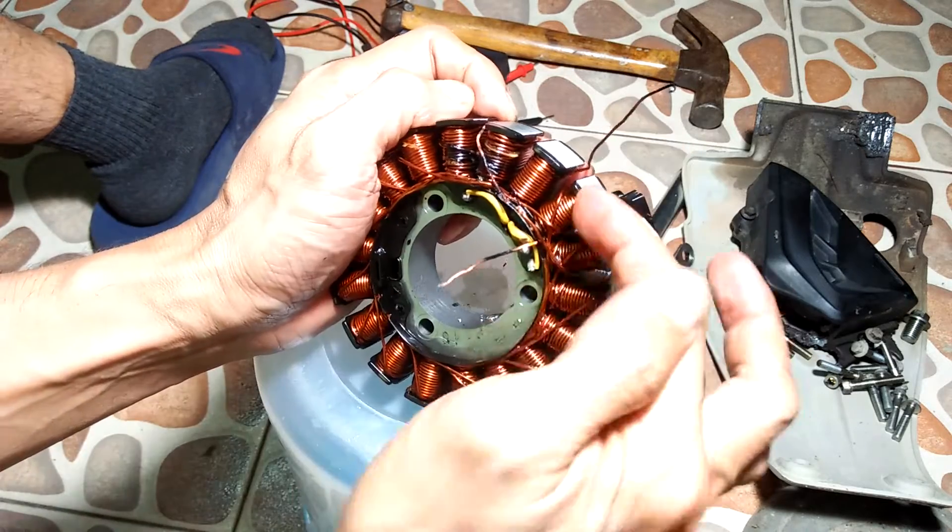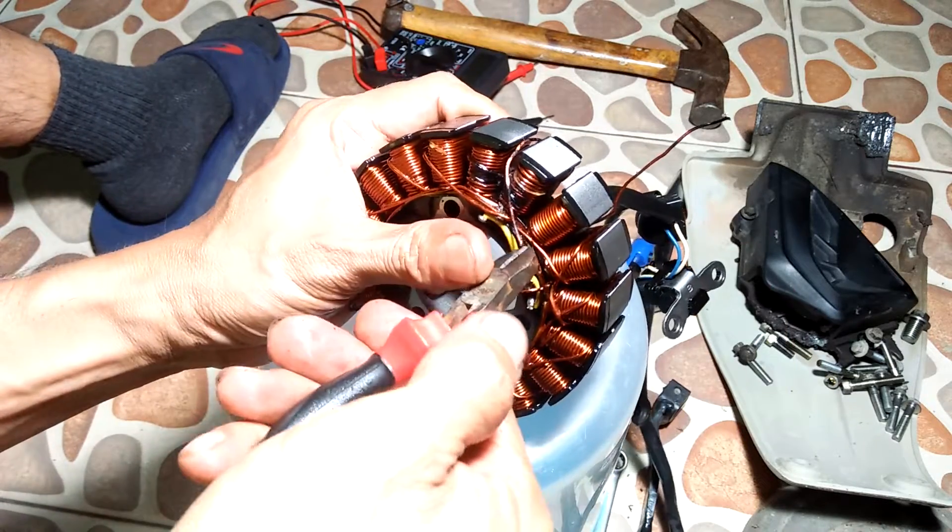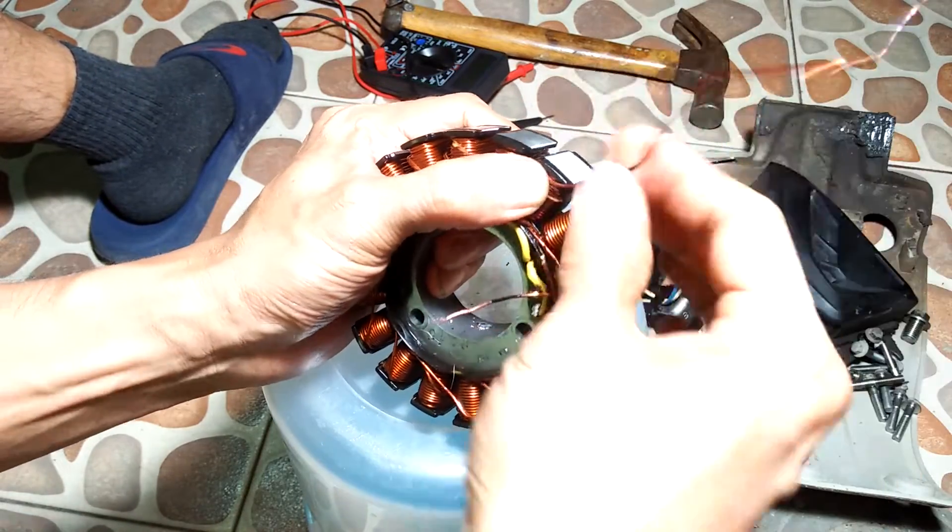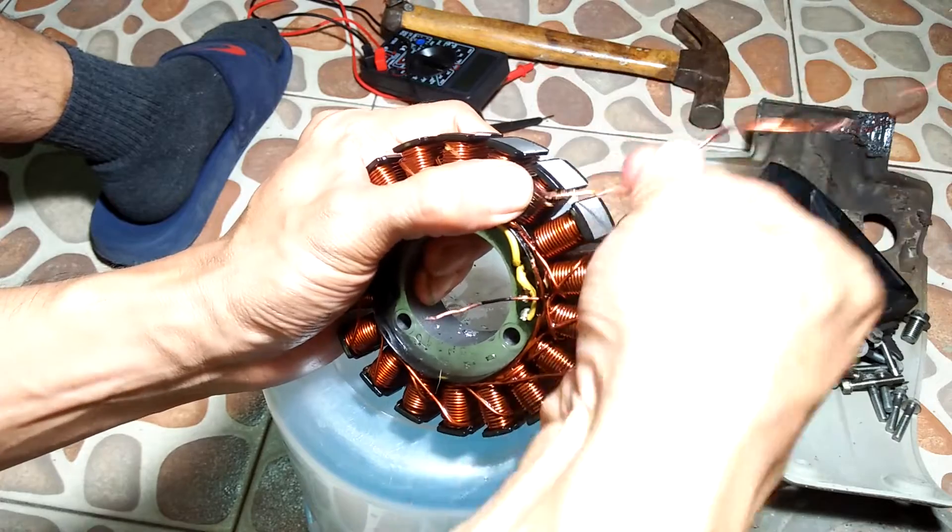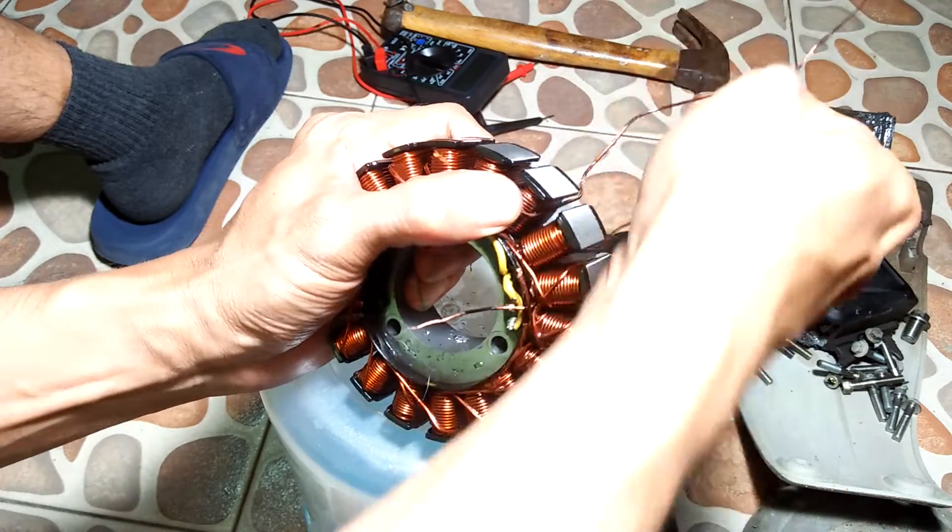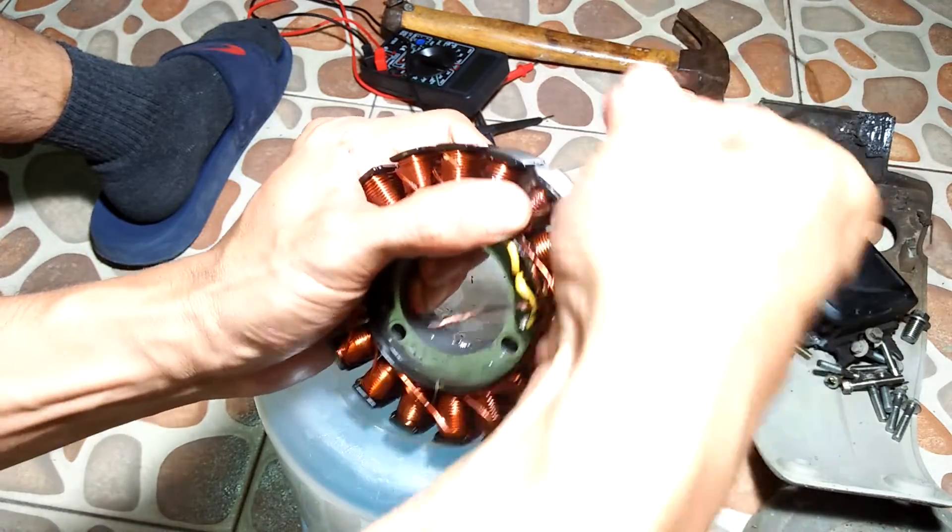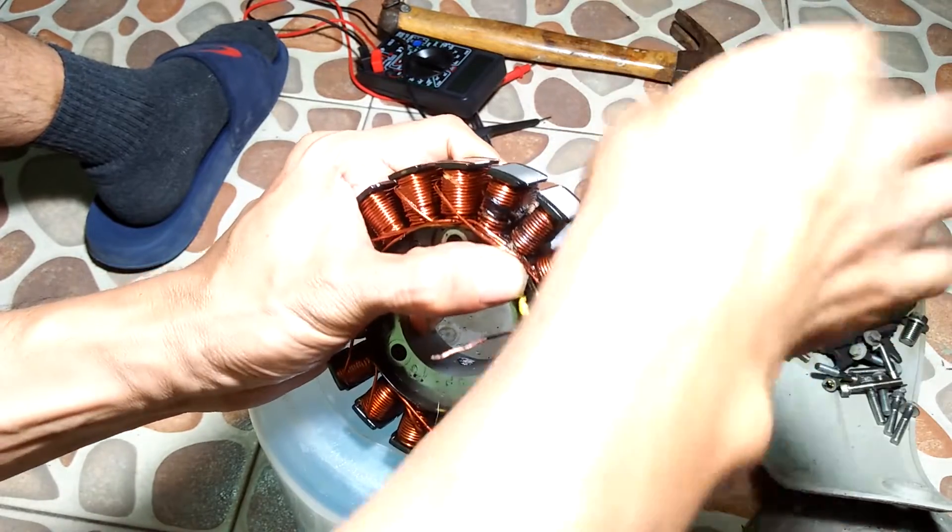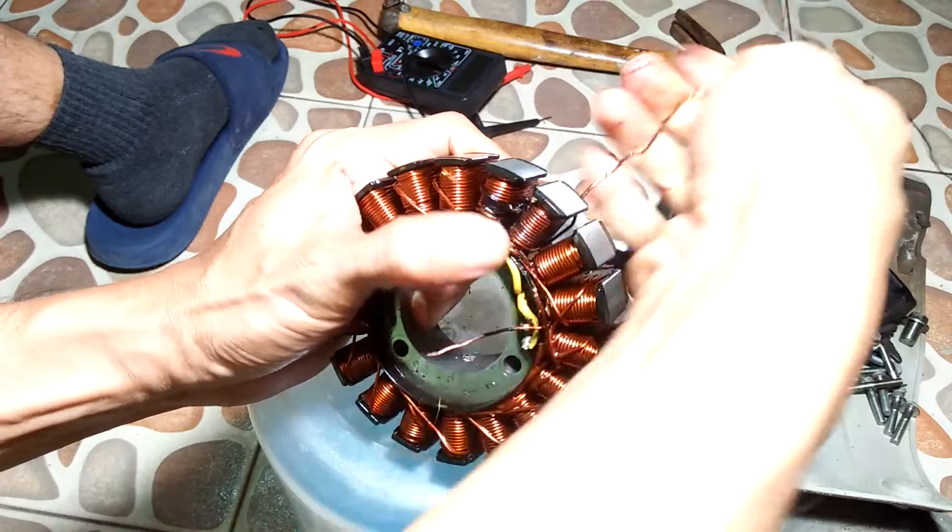I cut the wires leading to the affected pole windings and proceed to unwind the coils. I carefully count the number of turns and take note how many layers of windings are there in a pole.